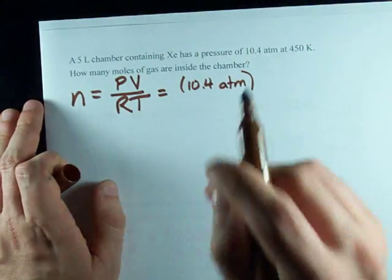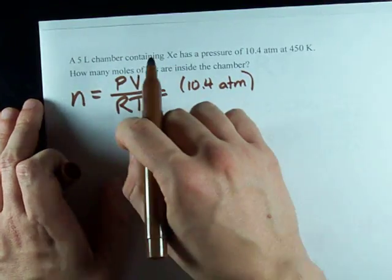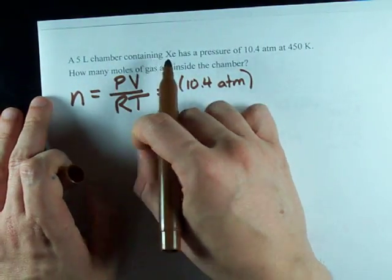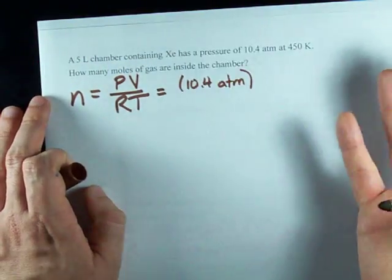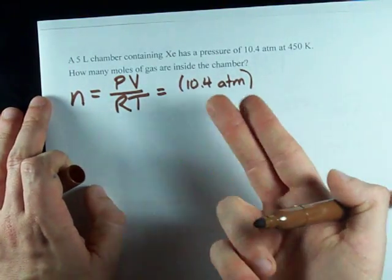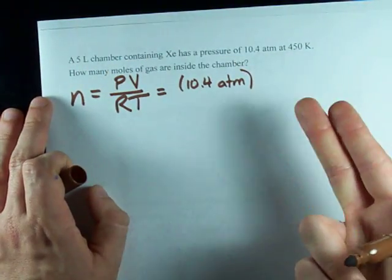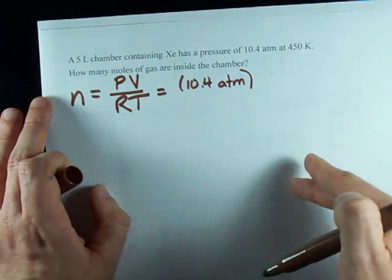But really, all it means is you can treat every single gas the same. I don't care if this is gaseous sugar or some massive molecule. If you're using the ideal gas law, you are assuming that they're all the same.